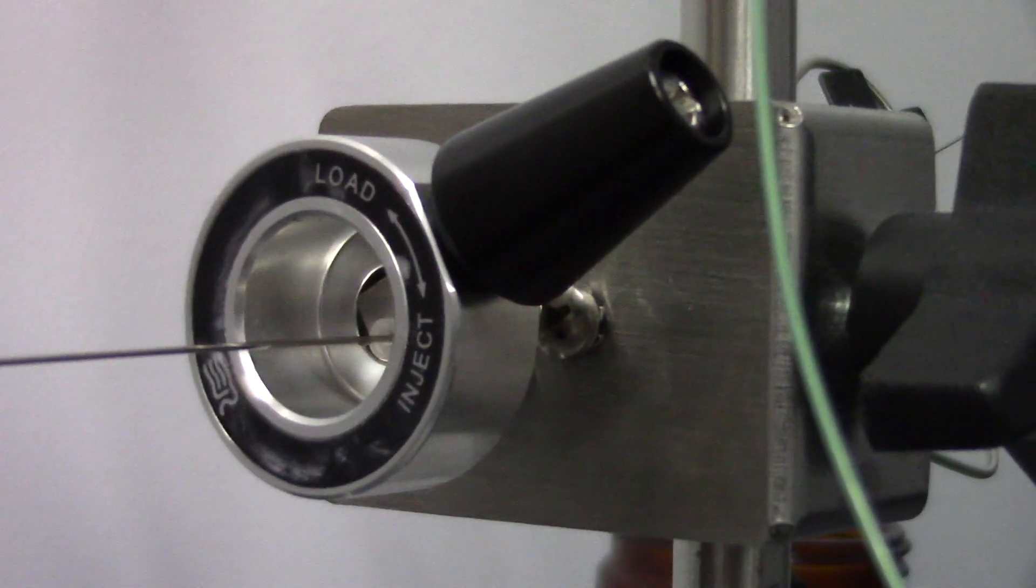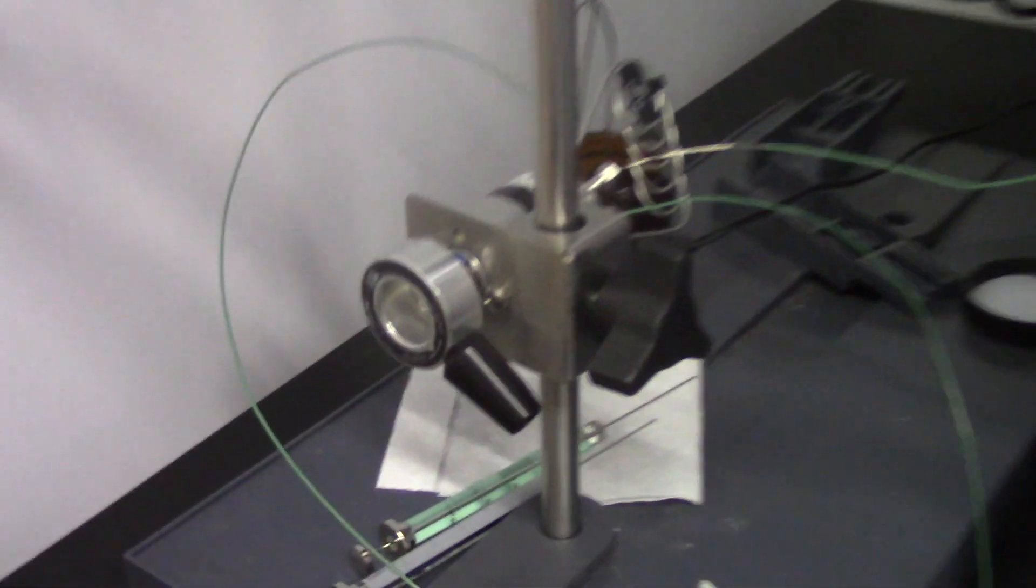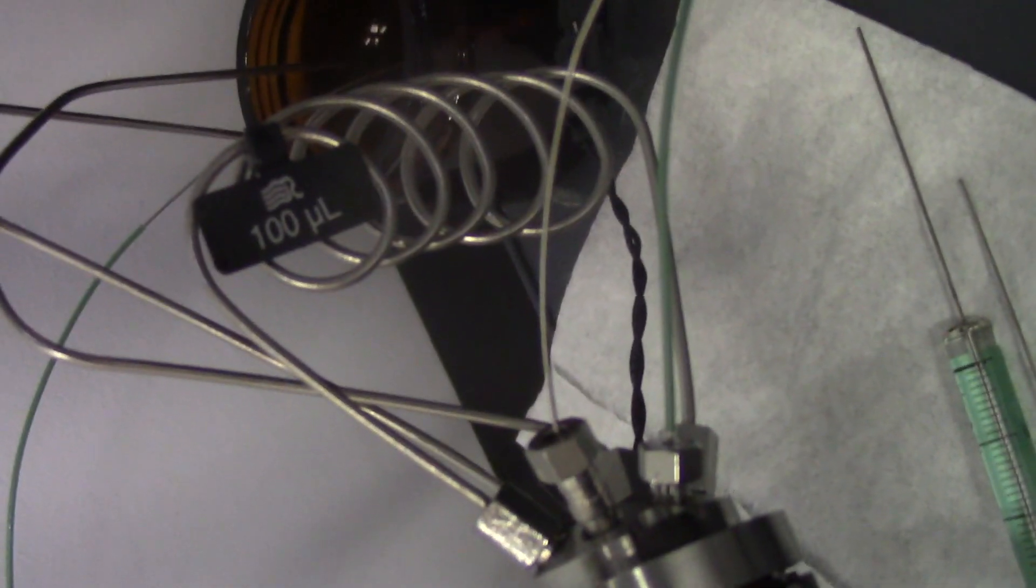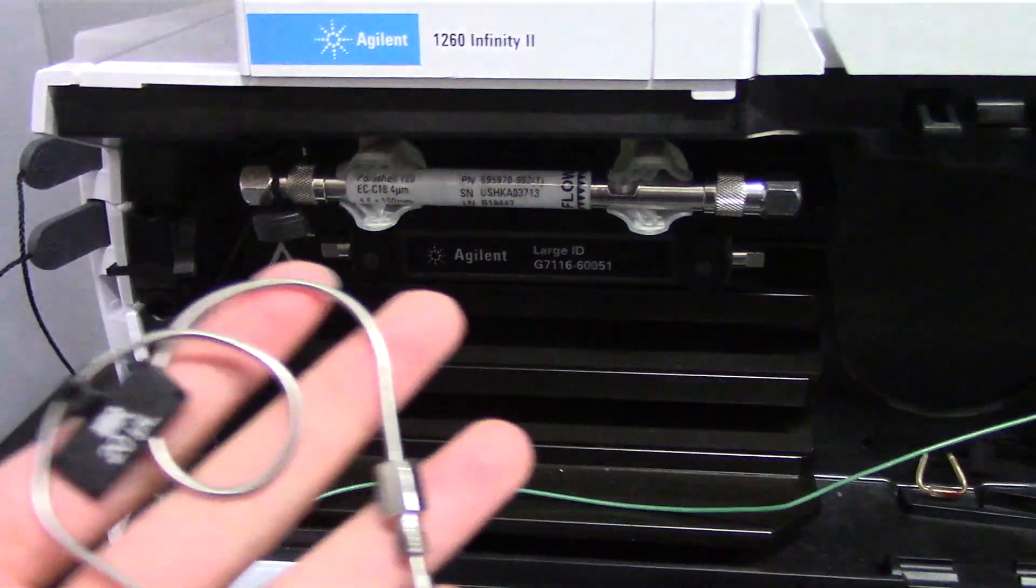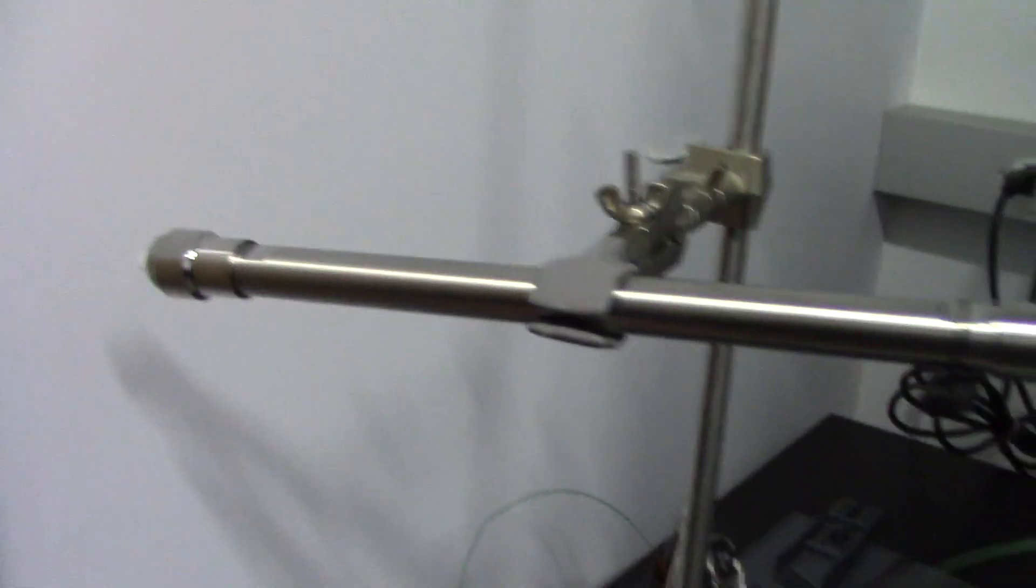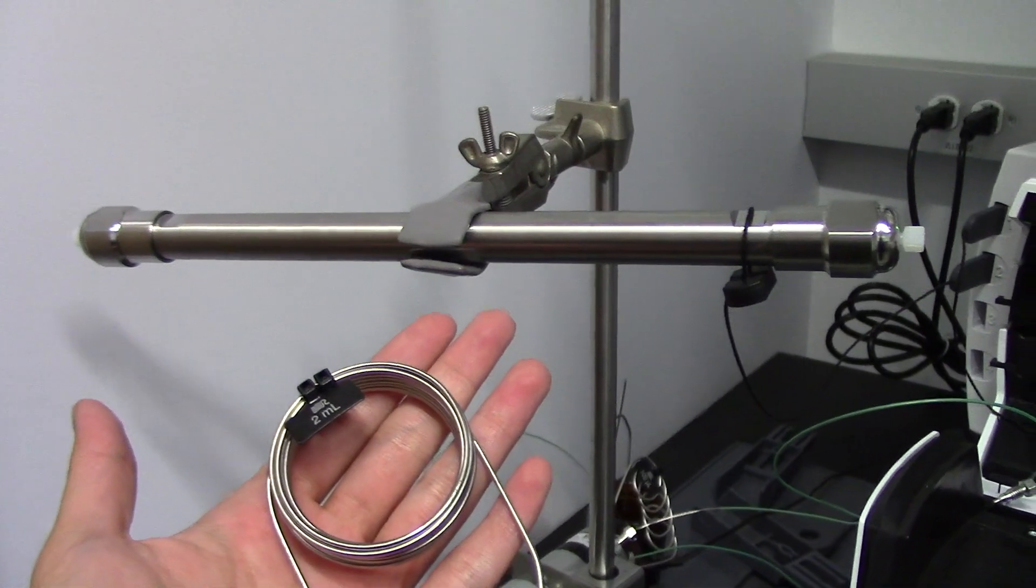An injector for an HPLC system is where you inject your sample. Attached to the injector is the loop of the HPLC. It is the amount of sample it can uptake. For smaller columns, you use smaller loops, and for bigger columns, you use bigger loops.